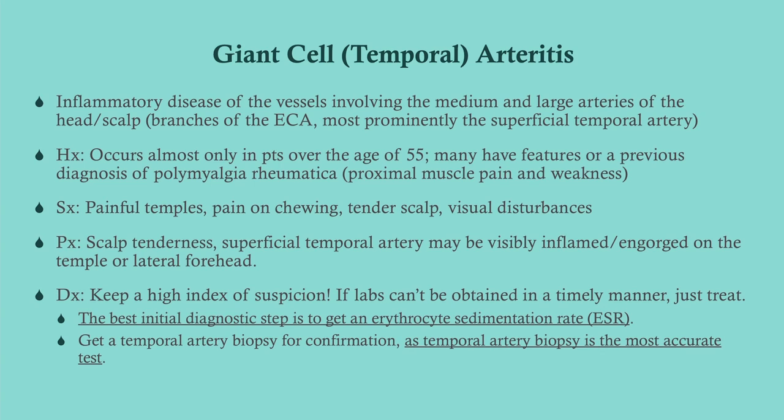This almost only occurs in older people — over 55, but more commonly in the 60s, 70s, and 80s. These patients will often have a pre-existing diagnosis or fit the criteria for polymyalgia rheumatica — there's a lot of overlap. Symptoms include pain in the scalp, pain in the temples, pain on chewing, and possibly visual disturbances, which is a huge problem and makes this an emergency. On physical examination, expect scalp tenderness and possibly an enlarged superficial temporal artery.